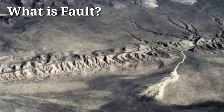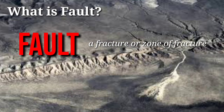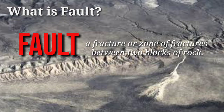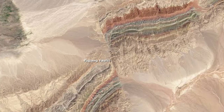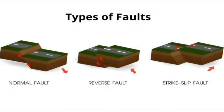Now, what is a fault? A fault is a fracture or zone of fractures between two blocks of rock. Faults allow the blocks to move relative to each other. This movement may occur quickly in the form of an earthquake, or may occur slowly in the form of creep.